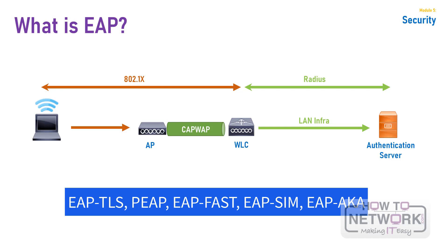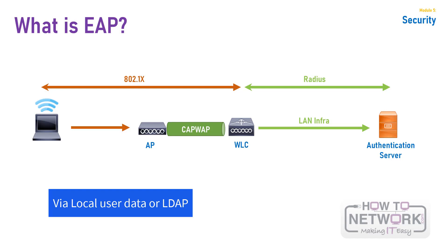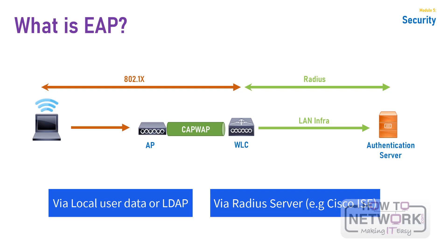Now let's talk about the authentication server. The authentication server functionality in the EAP process can be provided locally by a Cisco Wireless LAN Controller, referred to as local EAP. Local EAP can use either the local user database or an LDAP database to authenticate users. Local EAP can also be used as a backup for RADIUS authentication, allowing wireless clients to authenticate even if the controller loses connectivity to the RADIUS server. Globally, we can use a RADIUS server such as Cisco Identity Services Engine or ISE, Microsoft Server configured for RADIUS NPS, or any RADIUS-compliant server.